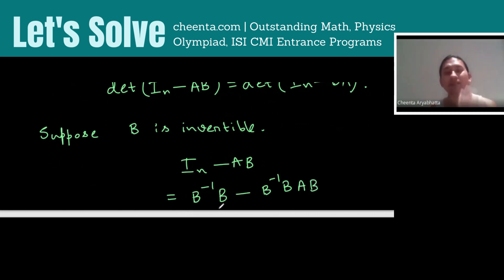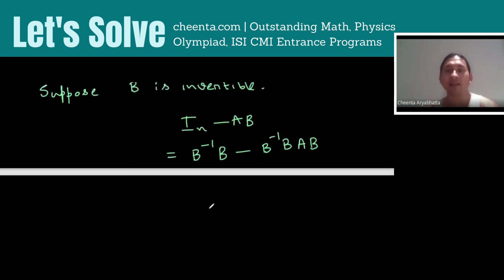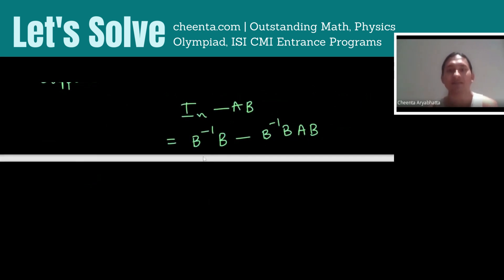Because B inverse B is always identity. Now we can take B inverse and B common, which gives us B inverse times identity minus BA times B.